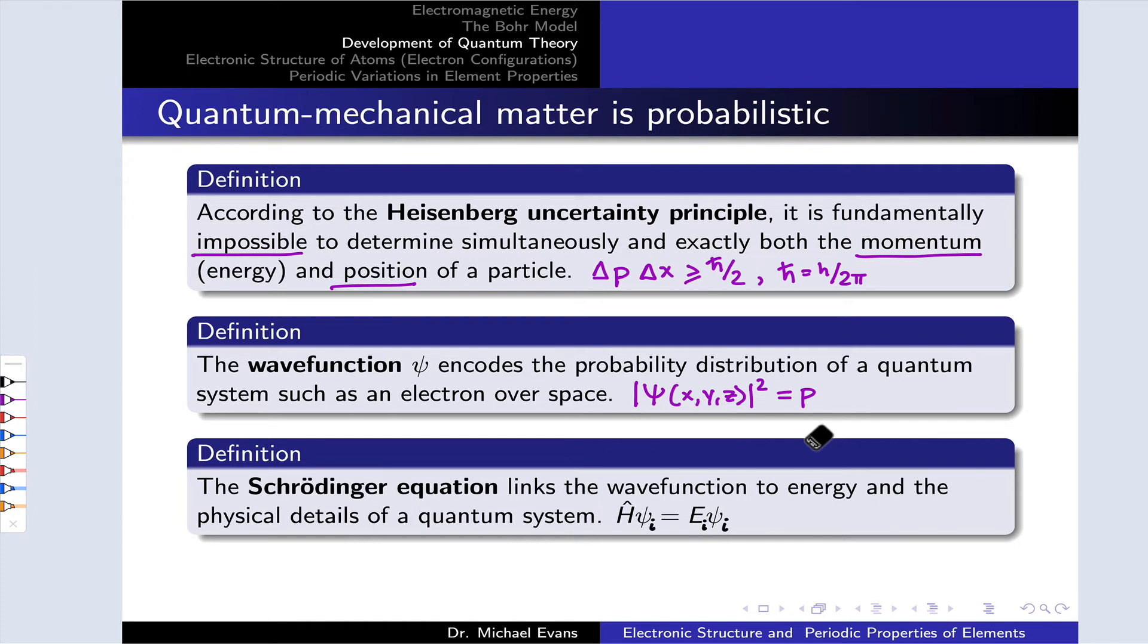Wave functions come from a fundamental equation of quantum mechanics called the Schrödinger equation. This equation looks a little enigmatic if you've never seen it before. H-bar times a wave function, psi, and actually there are many solutions to this equation, so I've added an i subscript here, is equal to E times psi.